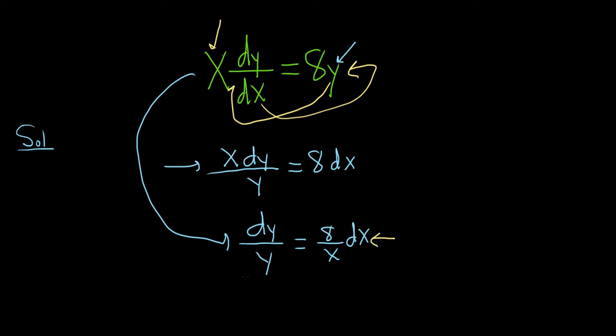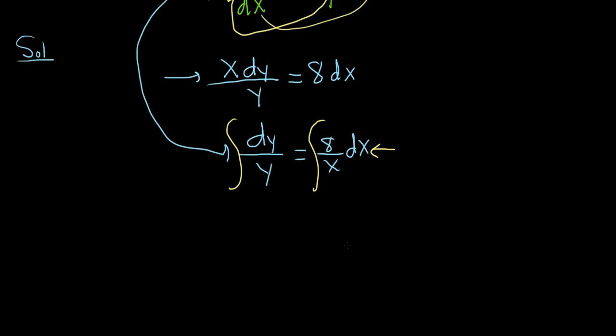So now that we're in this position, what we can do is we can integrate both sides. So integrate, integrate. So whenever you have dy over y, that's the same thing as 1 over y. That integrates to the natural log of the absolute value of y.